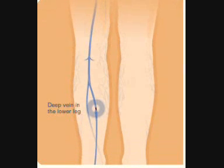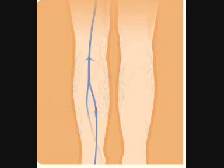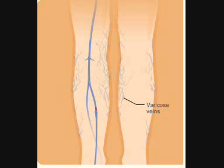Sometimes these clots can move to the lungs, which is called pulmonary embolism. This is unlike clots in veins that are close to the skin, or superficial, which remain in place. For example, varicose veins are not a risk factor for pulmonary embolism.